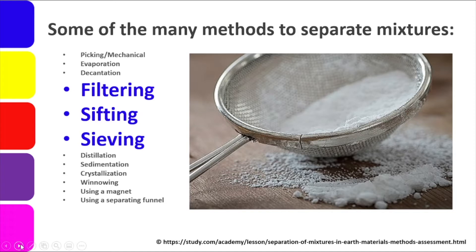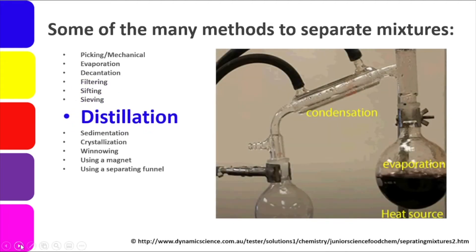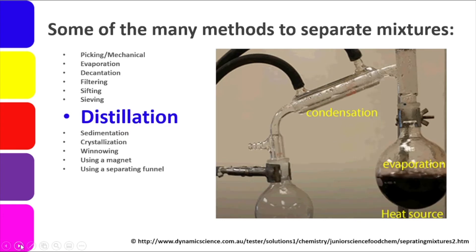Sieving is similar to sifting but for larger objects. An example is a mixture of sand and stones — we sieve it to remove the stones or separate the fine sand used in construction. Distillation involves two processes: evaporation first, then condensation. The component with a lower boiling point turns to steam first, rises as gas, then is cooled in the condensation portion so it returns to liquid form and transfers to a different container.